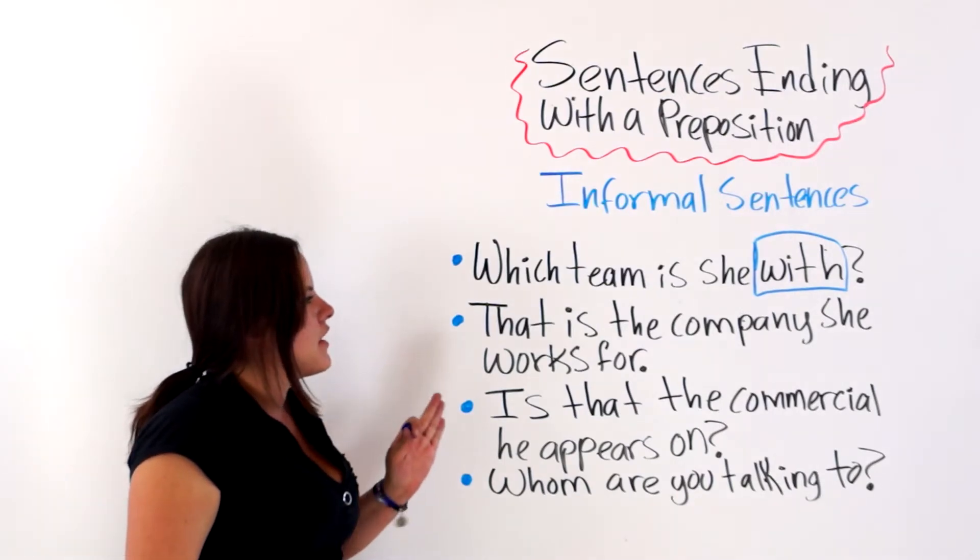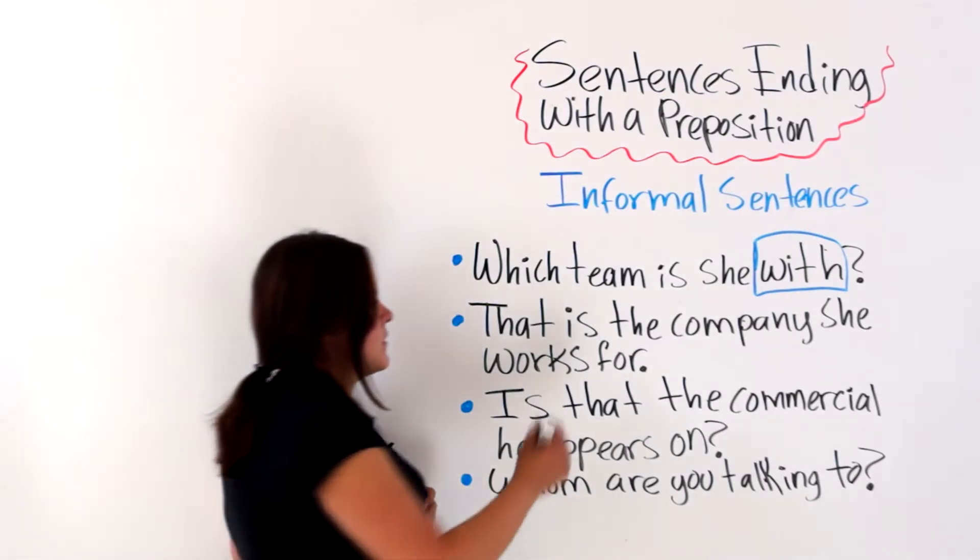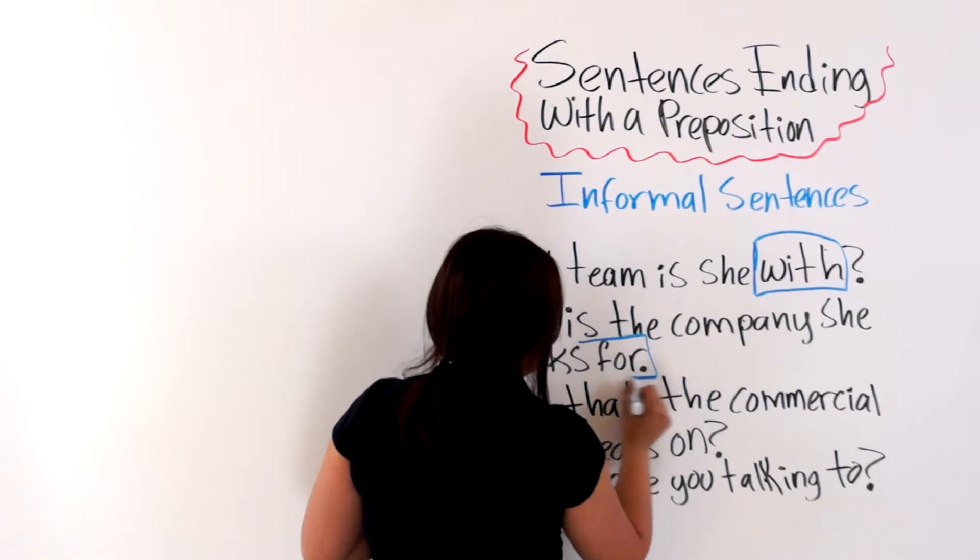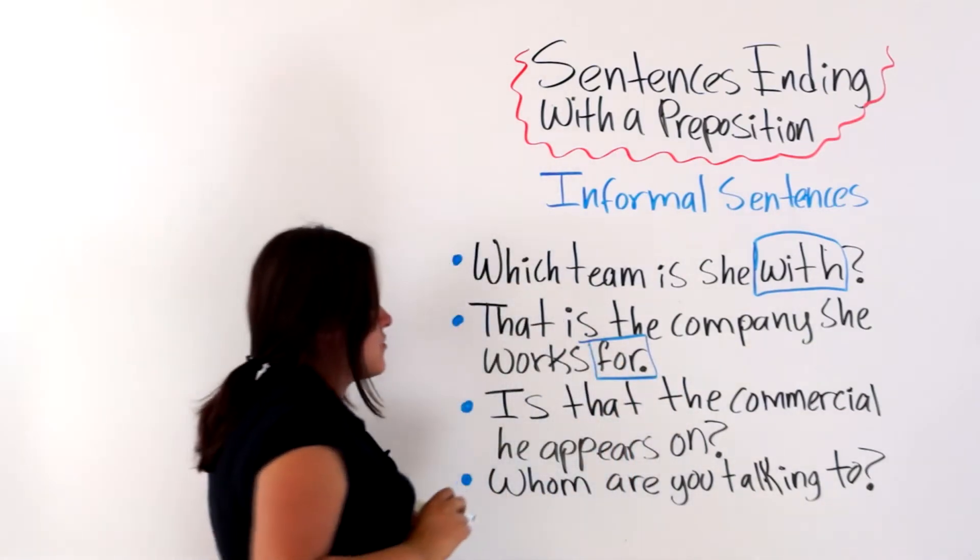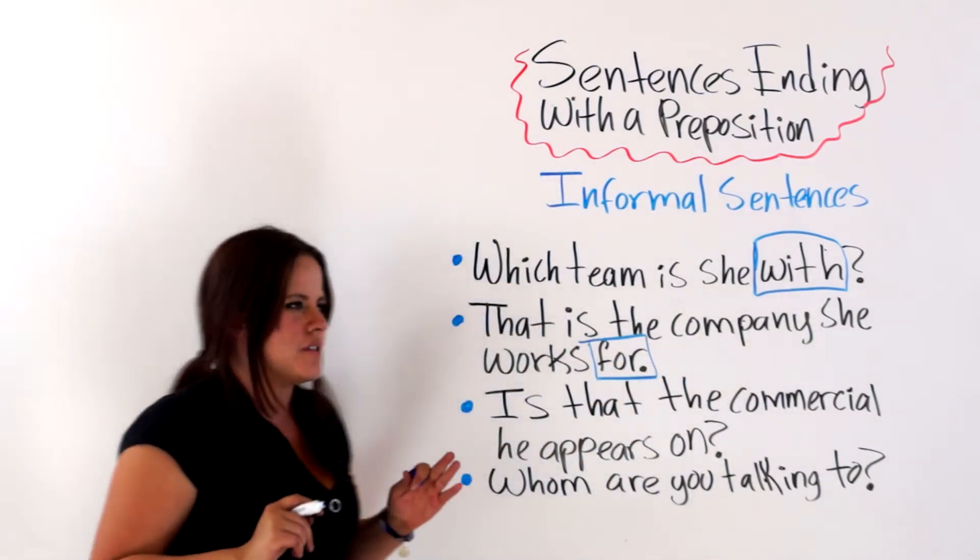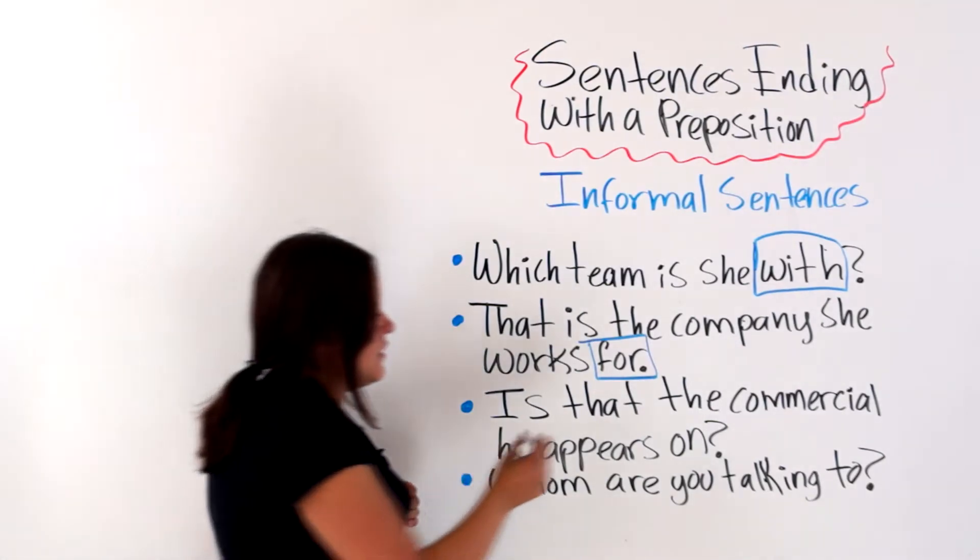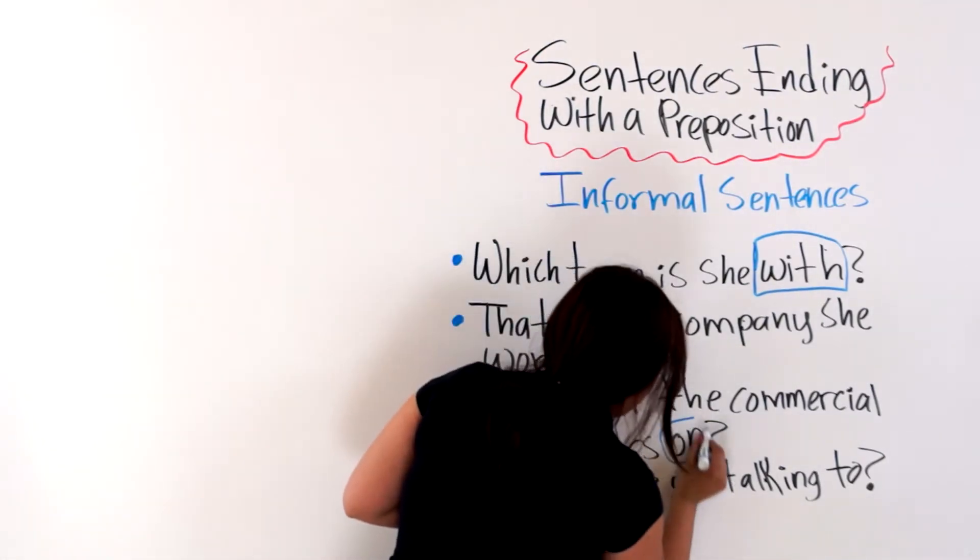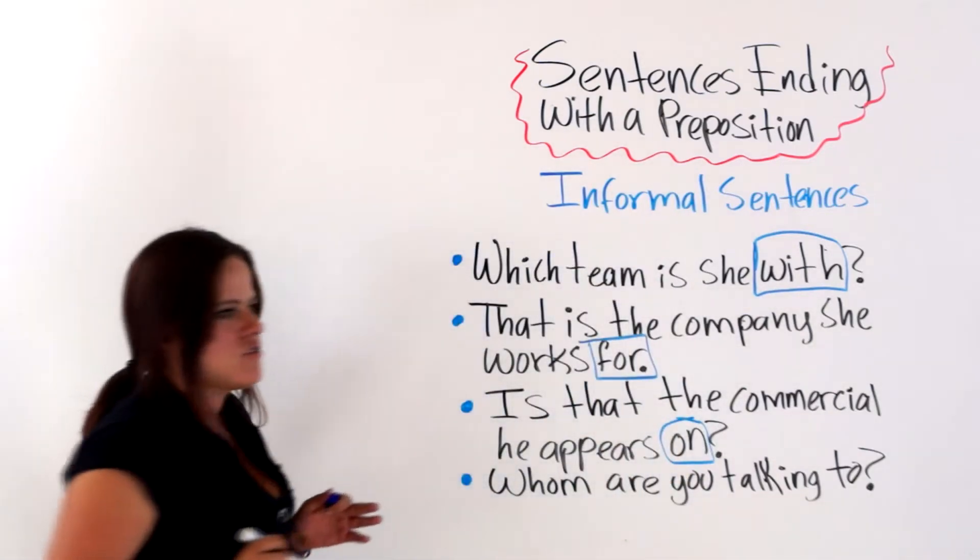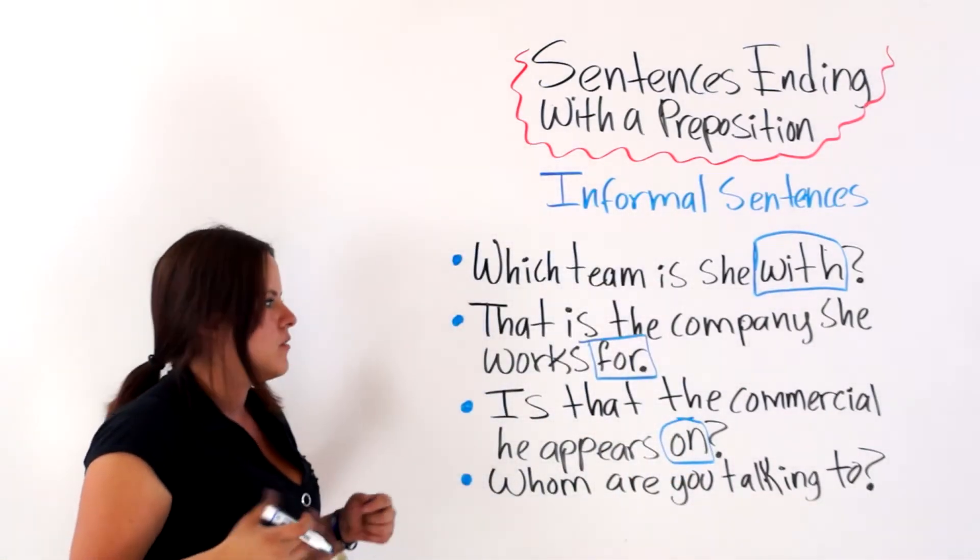The next one says, that is the company she works for. For is another preposition ending an informal sentence. And, is that the commercial he appears on? On is another preposition ending our sentence or question.